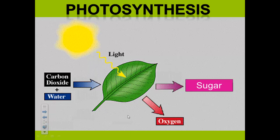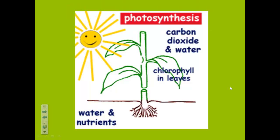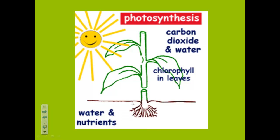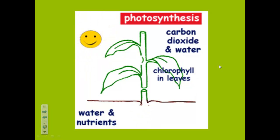Here is another diagram of photosynthesis. The sunlight is going to the leaf as well as carbon dioxide and water, and the leaf produces sugar and oxygen. Another diagram in a different form: sunlight, carbon dioxide, and water go to the chlorophyll in the leaves. The water and nutrients go through the roots, and sugar and oxygen are released.